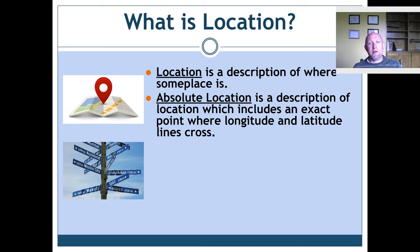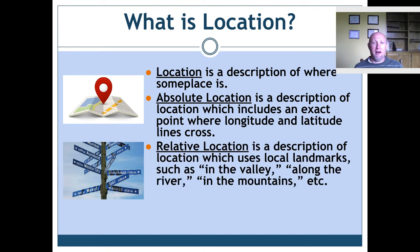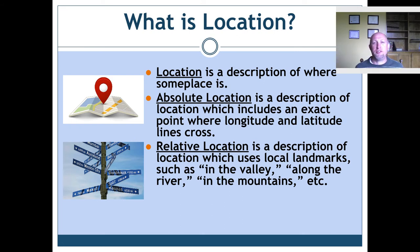There's another way we describe location, and this is the way the average person describes location on a day-to-day basis — it's called relative location. Relative location is a description of location which uses local landmarks, such as 'in the valley,' 'along the river,' 'in the mountains,' etc. For example, if you say my house is down the street from USA Market, or meet me at the bike racks after school, you are giving a relative location.